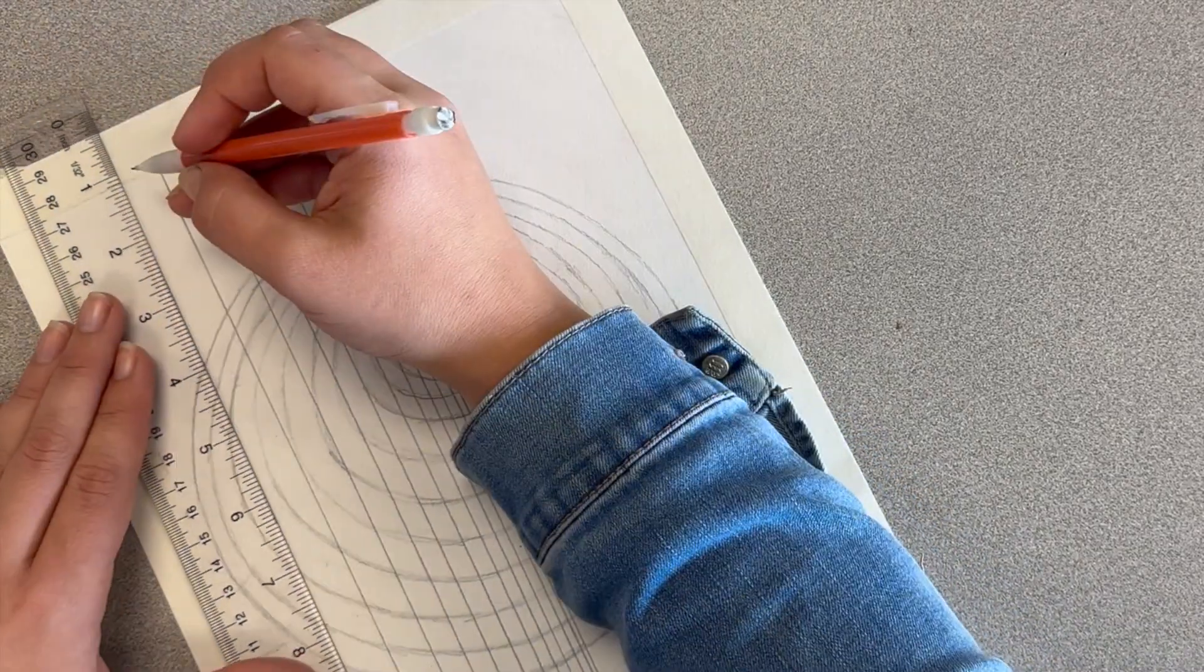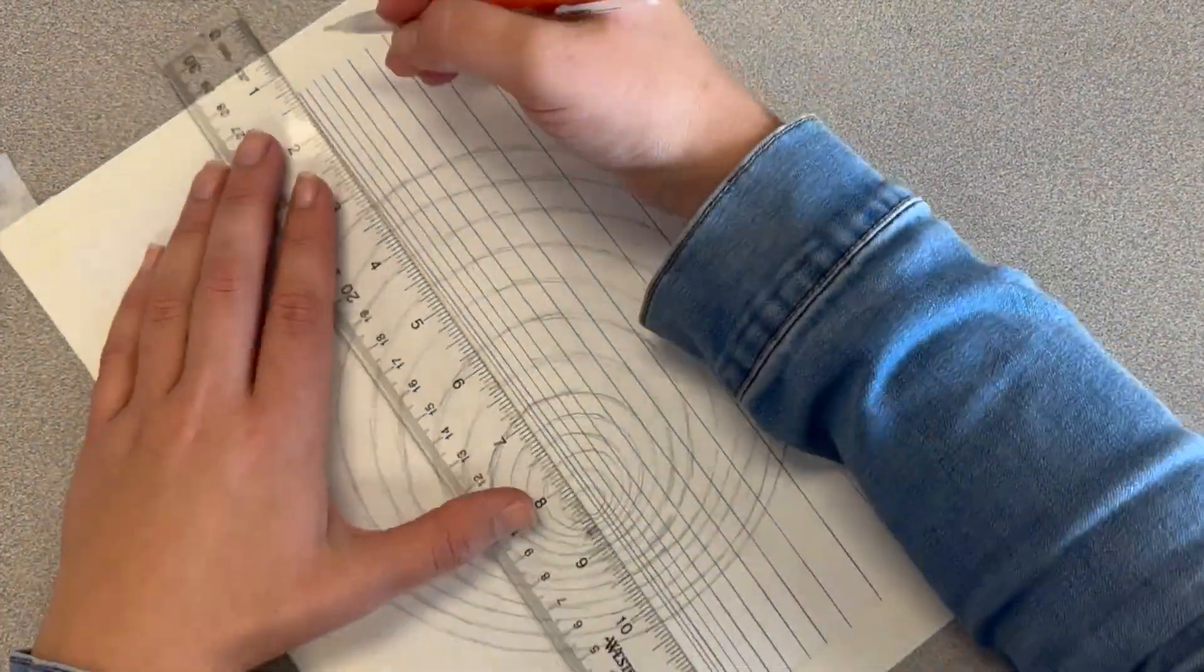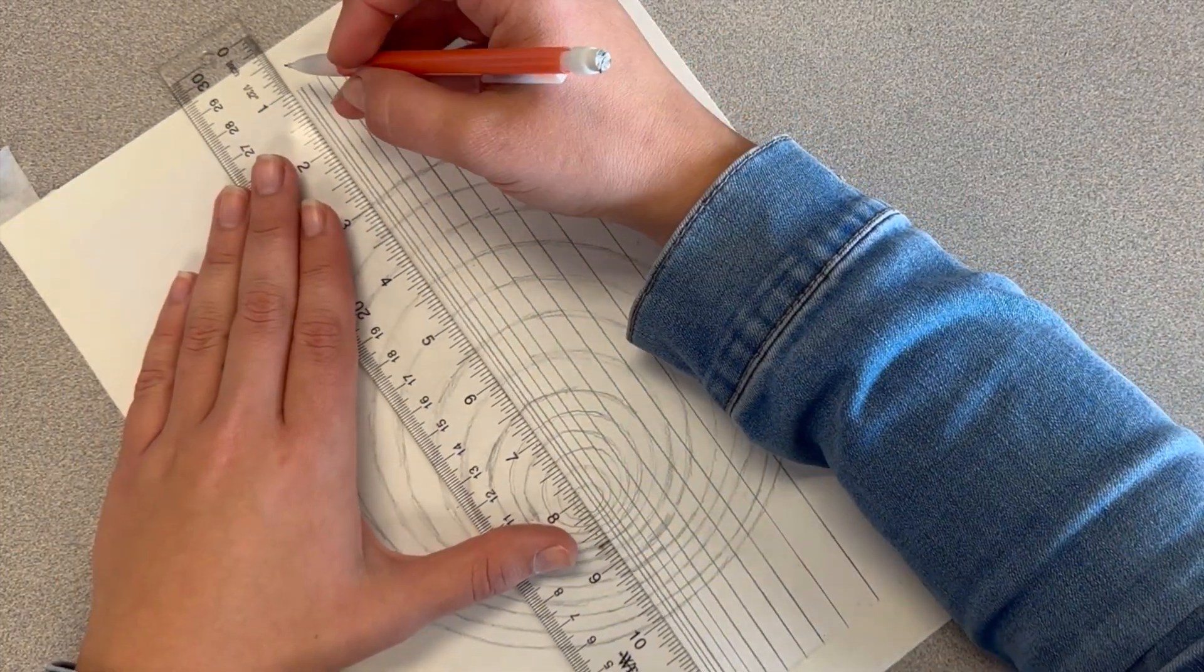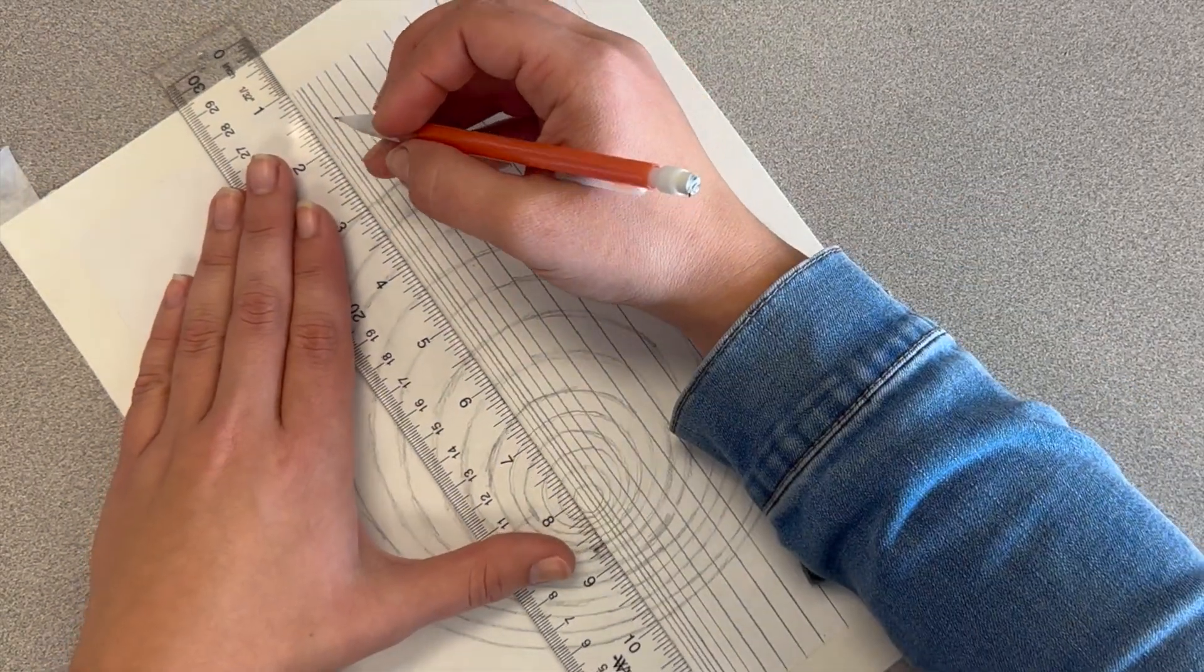then you will draw a line super close to it. Then the next one is going to get just a little bit further, and then a little bit further, and then a little bit further. So every line is going to be spaced out just a little bit more as you go.